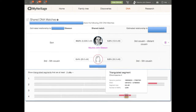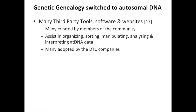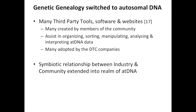MyHeritage also has a very nice triangulated segment tool which allows you to identify overlapping segments, and this can be very useful for genealogical proofs. The switch from Y-DNA to autosomal DNA allowed many people in the customer base to become citizen scientists, creating tools, software, and websites to help organise, interpret, and visually present the data. Many of the tools created by consumers were later adopted by the direct-to-consumer companies, which really emphasises the symbiotic relationship between industry, academia, and the customer base. A new opportunity for citizen science opened up as a result.